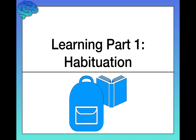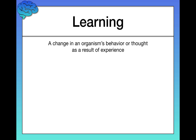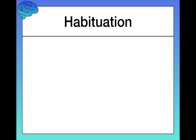In this video we're going to start a series of a few videos all about learning. We're going to focus specifically on habituation, one of the simplest forms of learning. In our next two videos we'll learn about classical conditioning and operant conditioning. But let's start with a general definition of what psychologists mean when they talk about learning. Learning is simply a change in an organism's behavior or thought as a result of experience.